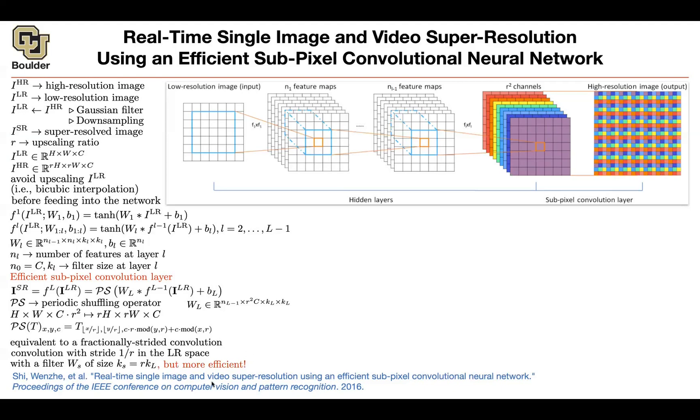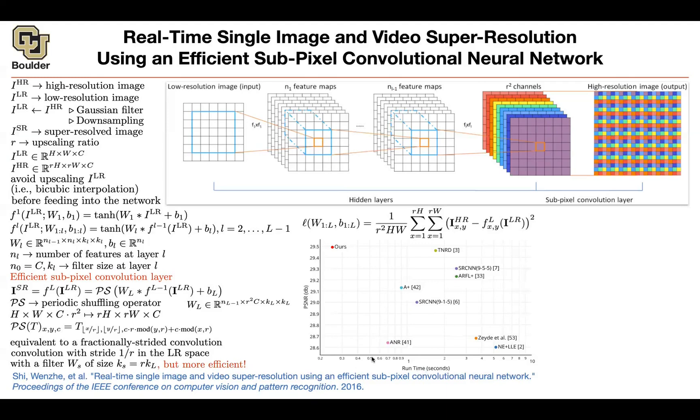It turns out that this is actually equivalent to a deconv or transposed convolution or fractionally strided convolution with a stride 1 over r, and when you're increasing the size of your filter by r times - so your filters are now r times bigger. This is equivalent.